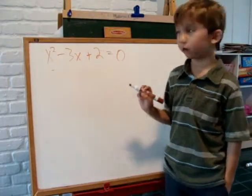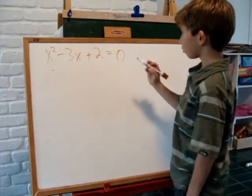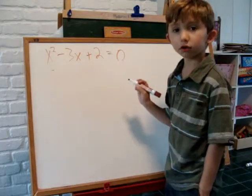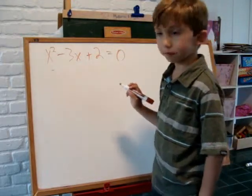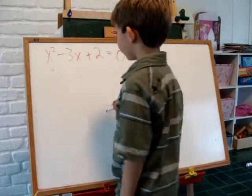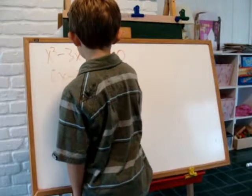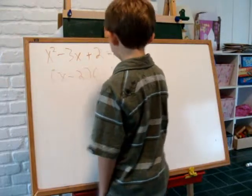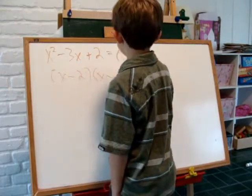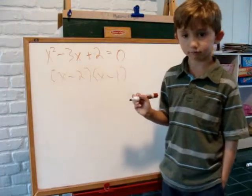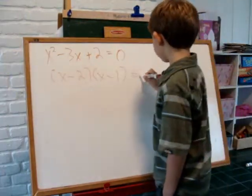Here's another quadratic equation. x squared minus 3x plus 2 equals 0. This one can also be solved easily by factoring. Once factored, we get x minus 2 times x minus 1 equals 0.